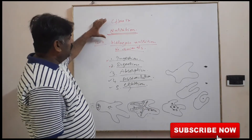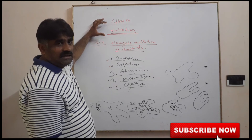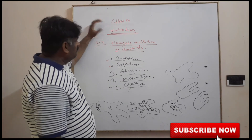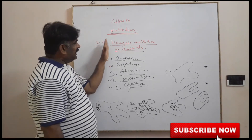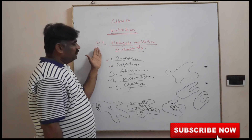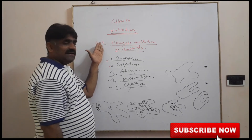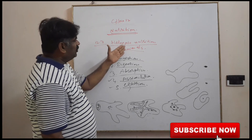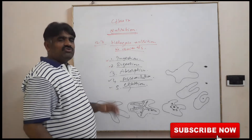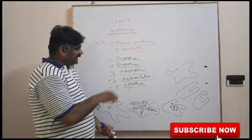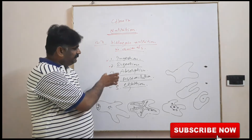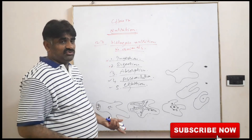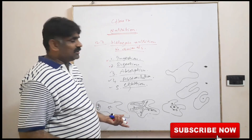So finally, we have started chapter number twelve on nutrition. In this nutrition chapter, we have covered section 12.7 on holozoic nutrition in animals. Today we discussed all the basic steps of holozoic nutrition, what holozoic nutrition is, and also completed an example of holozoic nutrition in amoeba.